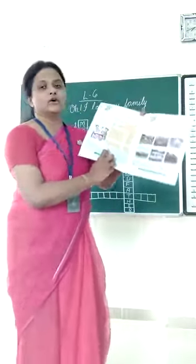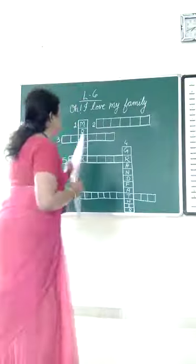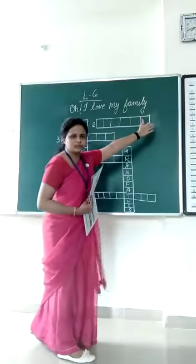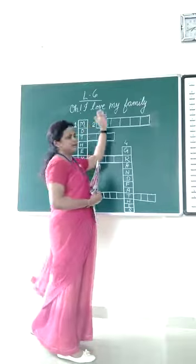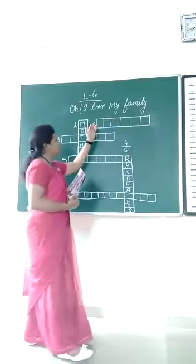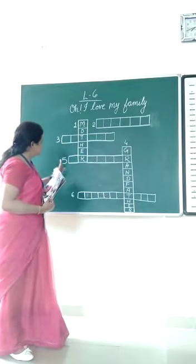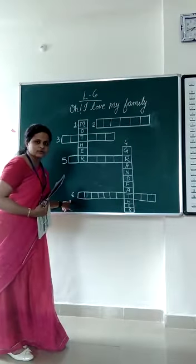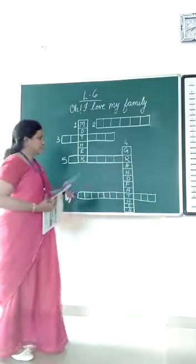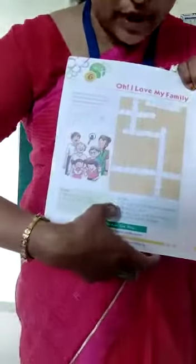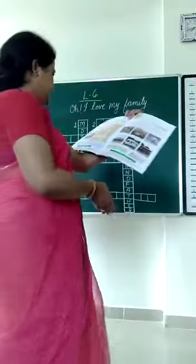Now come to the across. Across means from one side to another. How many acrosses do we have? One, two, three, four — we have four acrosses. Now we will read number two in the across. Here the acrosses are given. From these, we have to read number two.